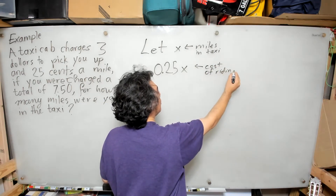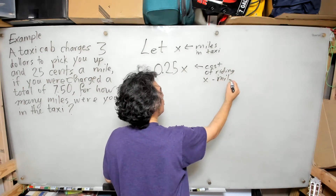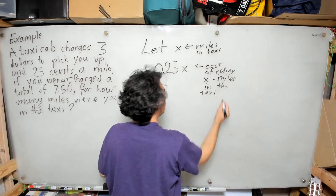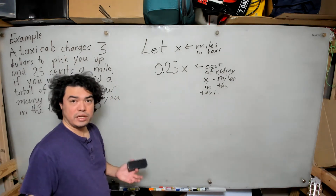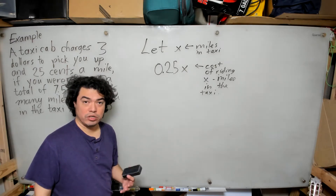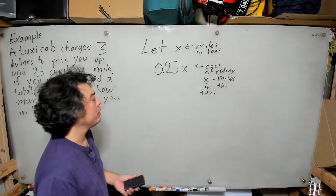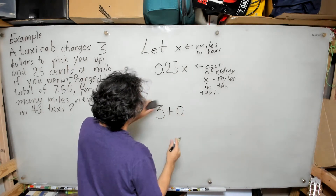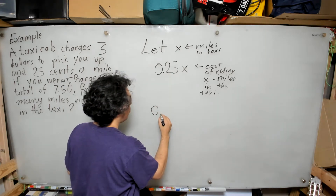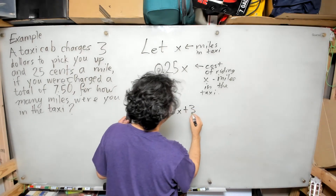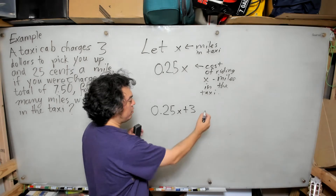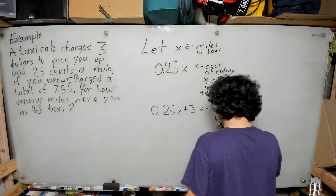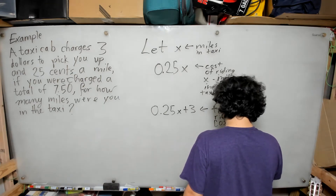The first thing they told us is that we need to pay $3 when we get in the taxi — that's the pickup fee. To account for that, we write the total cost expression as 0.25x + 3. This expression represents the taxi cost for x miles.